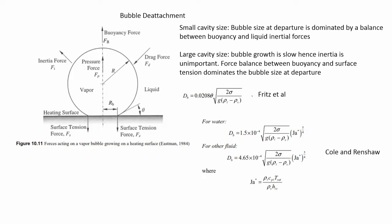Welcome to the final lecture of this particular series. Today we are going to study bubble detachment. As shown in the slide, the bubble first forms hemispherical caps, then slowly grows, and at one point detaches. Bubble size at departure is dominated by a balance between buoyancy and liquid inertial forces, particularly when the cavity size is small.